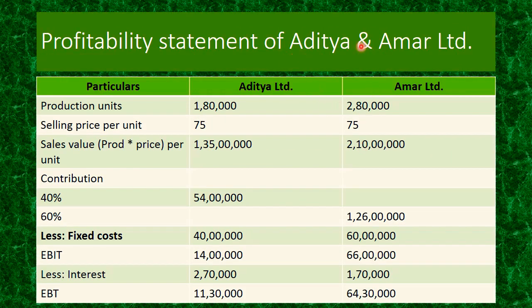Profitability statement of Aditya and Amar Limited. We have to frame this statement because it gives us all the data we need for calculation of leverages in one place. It has three columns: particulars, Aditya Limited, and Amar Limited. First is production units — 1 lakh 80,000 for Aditya at 90% capacity, and 2 lakh 80,000 units for Amar at 80% capacity.